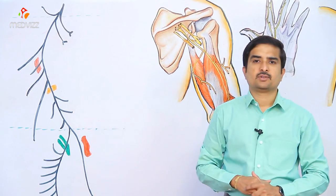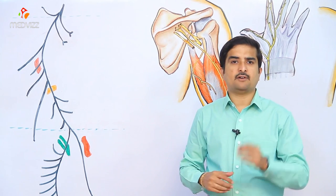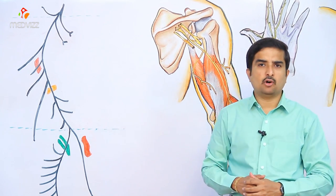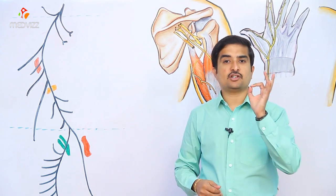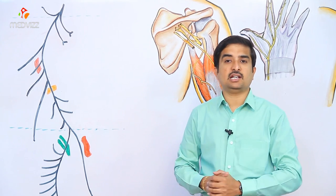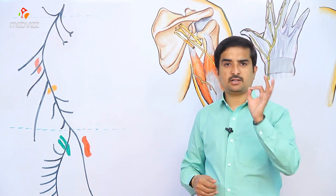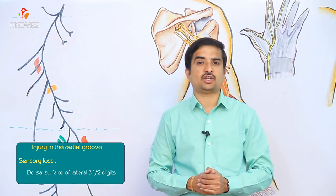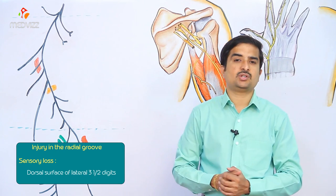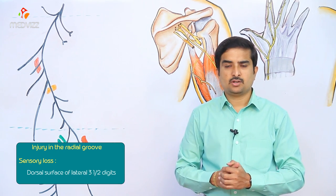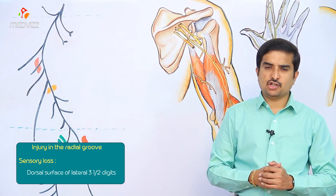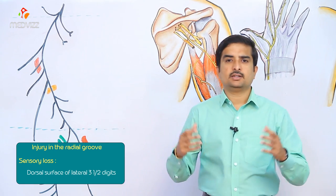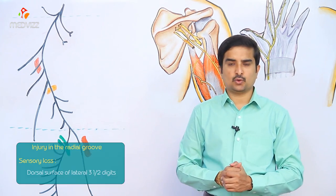Regarding sensory loss in spiral groove injury: the cutaneous branches to the arm and forearm have already arisen above the level of the spiral groove, so only the superficial branch of the radial nerve is damaged. This results in sensory loss on the dorsal surface of the lateral three and a half digits and their associated palmar areas.